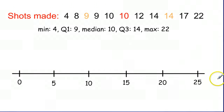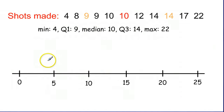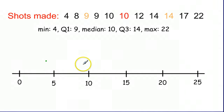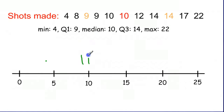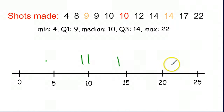Always draw a number line first because it makes sure that all of your values are spaced out appropriately. So your minimum four is around here, quarter one nine — instead of giving it a dot, we're going to give it a vertical bar. Median ten gets a vertical line, quarter three 14 gets a vertical line, and max 22 gets a dot. So the min and max are getting dots, the rest are getting these vertical lines.